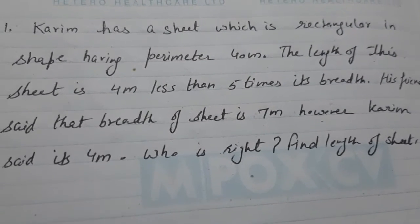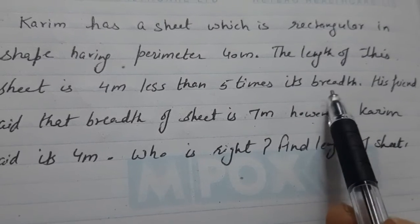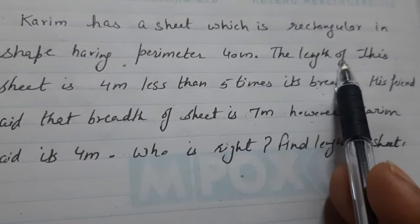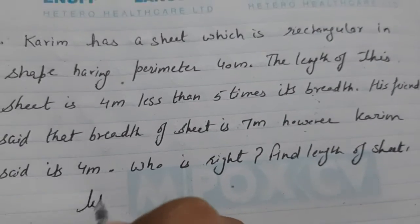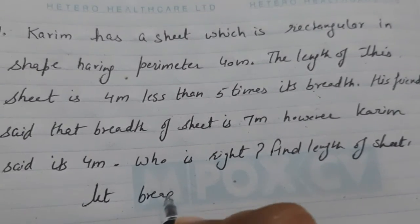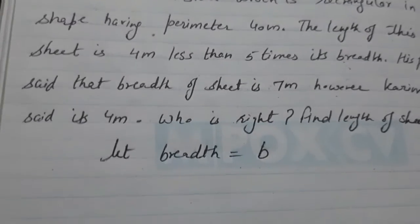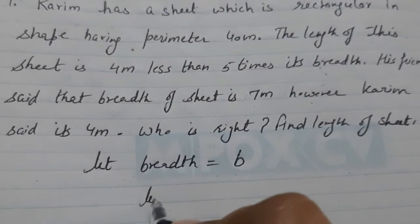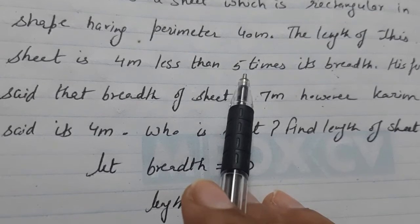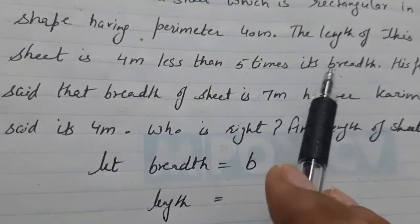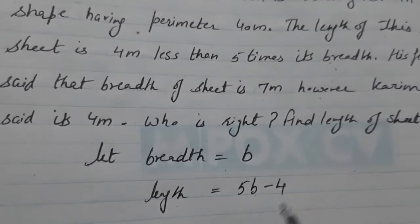First of all, we will suppose here the breadth, because length is given in the condition with the breadth. So, let breadth is equal to B. So, what will be the length? Length will be 4 meters less than 5 times its breadth. 5B minus 4.